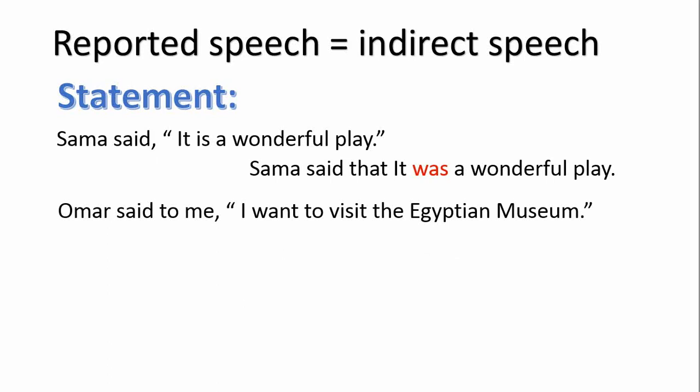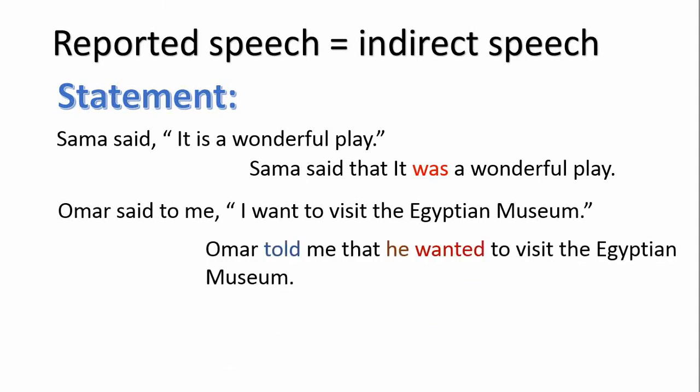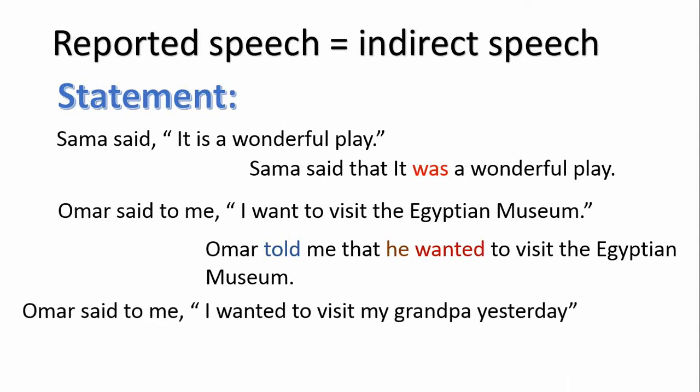Example number two: Omar said to me, 'I want to visit the Egyptian Museum.' Omar told me that he wanted to visit the Egyptian Museum. So what happened here is that we changed 'said to' into 'told'. We omitted the inverted commas and put 'that' instead. 'I' as a pronoun changed into 'he' because the speaker here is Omar. Concerning the verb 'want' in the present, when we step back, it will be 'wanted to visit the Egyptian Museum.'